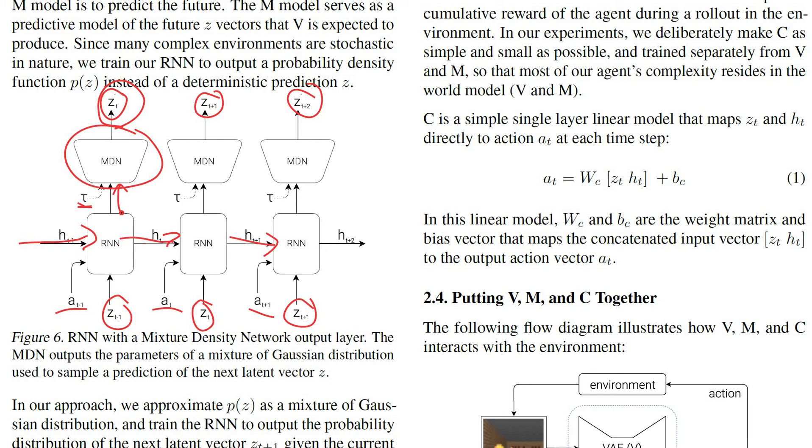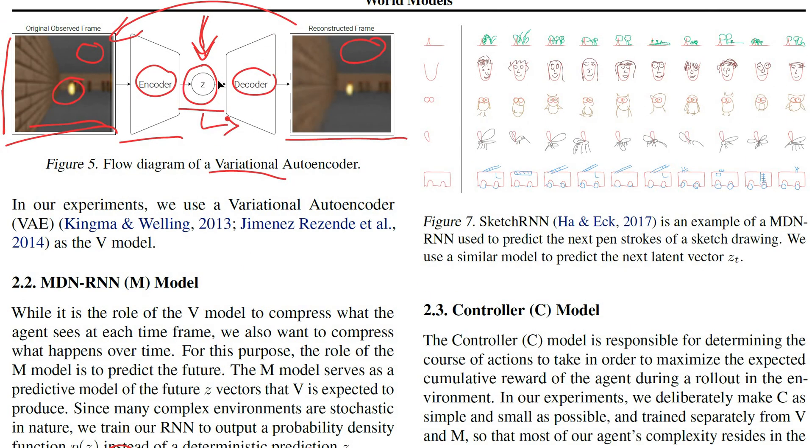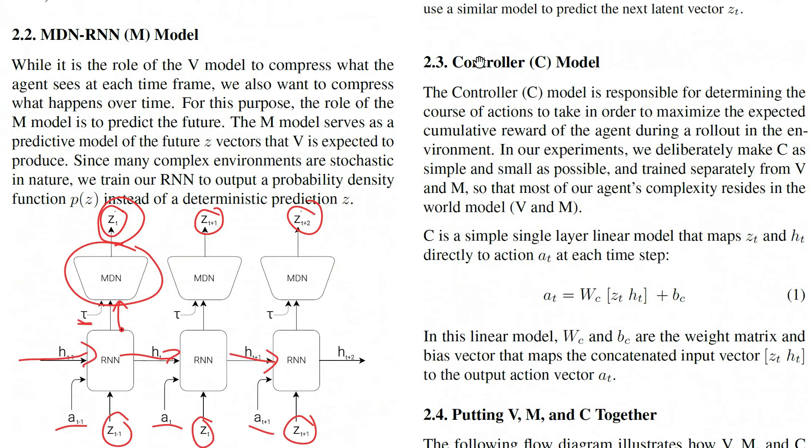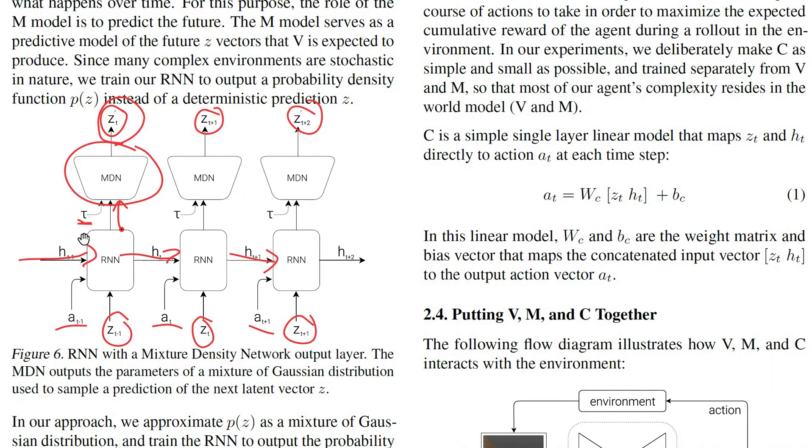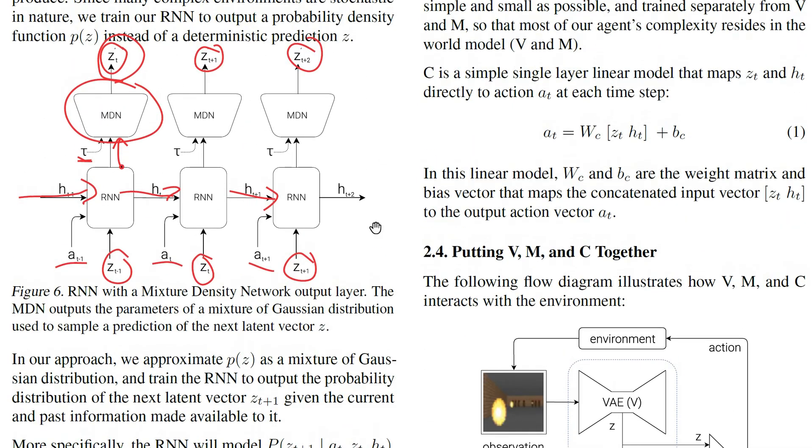Alright, so what do we have? We have a system that can compress the environment into what we would call an essential part. Every frame, we extract what's important in that frame. Then, next, we have a model that can predict, given a state and an action, what's the next state going to be, the next latent state. So technically, we now have an environment model, right? Given a state and a policy, we can simply use this model to roll forward.